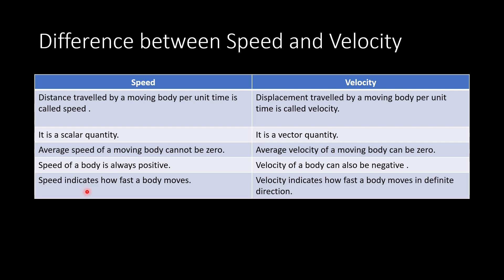Speed indicates how fast a body moves. But velocity indicates how fast a body moves with some definite direction. The directions are specified as i-cap, j-cap, or k-cap, or simply by cardinal directions such as east, south, north, and west.